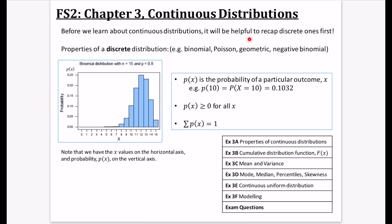Before we learn about continuous distributions, we're actually going to start by recapping discrete ones first. Discrete is where you have a fixed set of outcomes, normally integers, whereas continuous means you could have any particular outcome in a given range. Properties of discrete distributions: we've looked at binomial, Poisson, geometric, and negative binomial. With a binomial distribution where n is 15 and p is 0.8, the outcomes are between 0 and 15 — discrete outcomes — which is why the data is gathered more on the right-hand side.